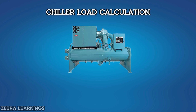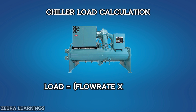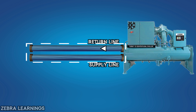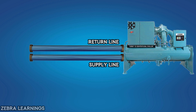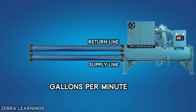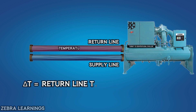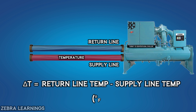Now let's learn how to calculate load. The formula to calculate chiller load is: Load equals flow rate multiplied by delta T, divided by 24. Flow rate is the measurement of how much water is flowing through the chilled water pipeline, measured in gallons per minute. Delta T is the difference between the return line water temperature and the supply line water temperature, measured in degrees Fahrenheit.